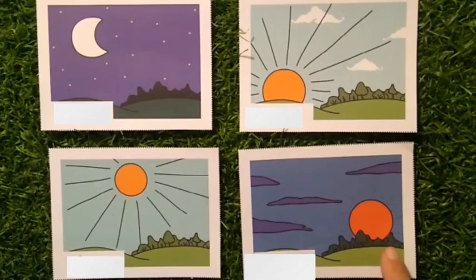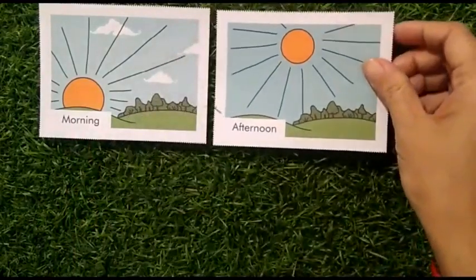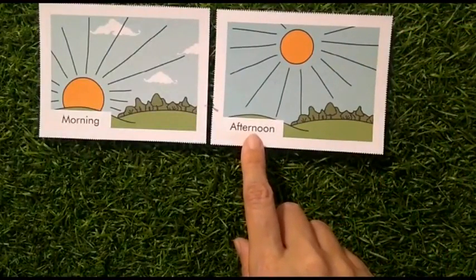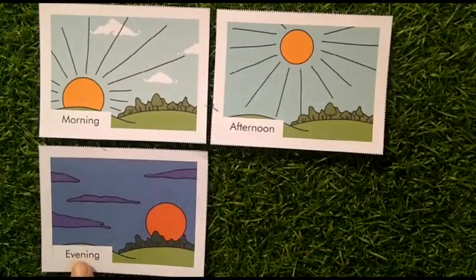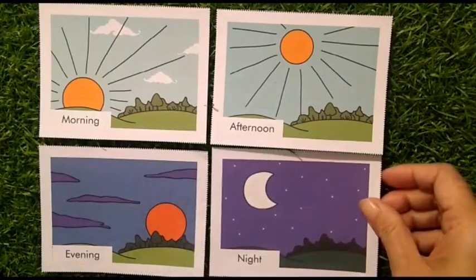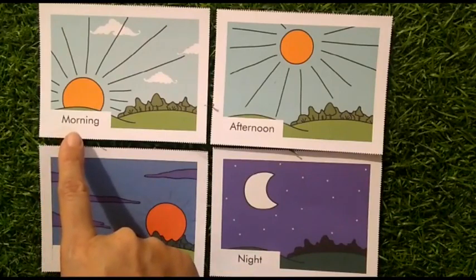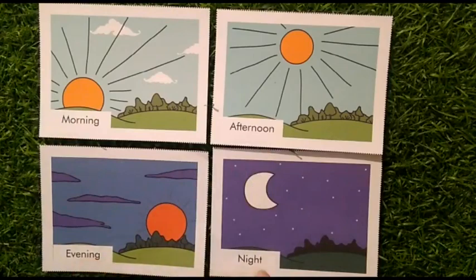So can we place them properly in order? Let's do that. Children, please repeat after me: morning. After morning comes afternoon — please repeat the word afternoon. Then comes evening — please repeat the word evening. And then comes night. So in sequence: morning, afternoon, evening, and night.